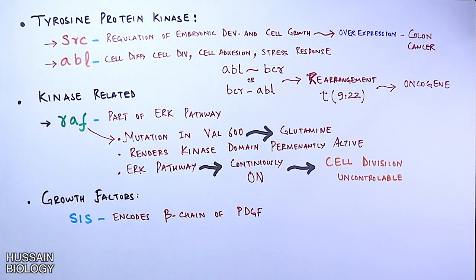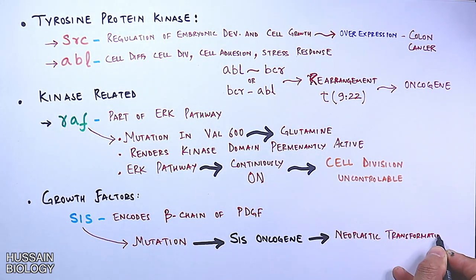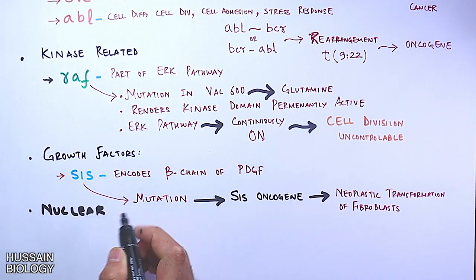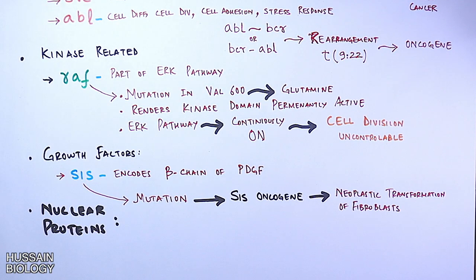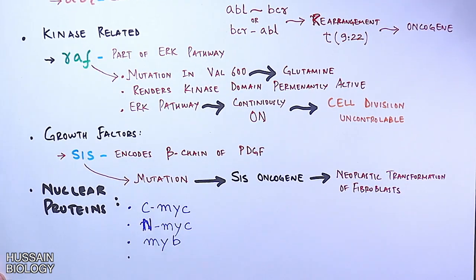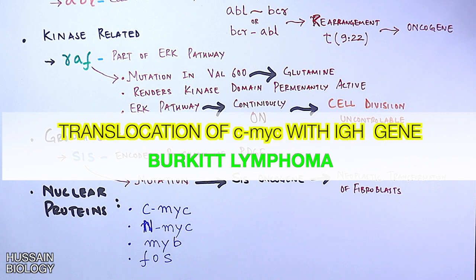Another proto-oncogene from the growth factor category is the SIS gene, which encodes the beta chain of PDGF. Mutation converts it to the sis oncogene, causing neoplastic transformation of fibroblasts. Nuclear protein proto-oncogenes include CMYC, NMYC, MYB, and FOS genes — all capable of becoming oncogenes once mutated or amplified. For example, chromosomal translocation of the CMYC gene with the IgH gene leads to Burkitt lymphoma.